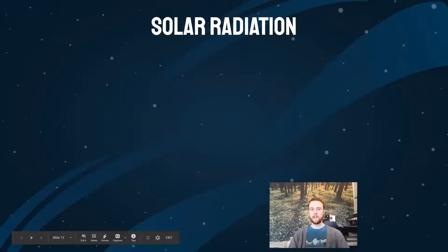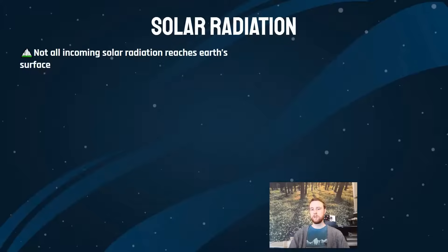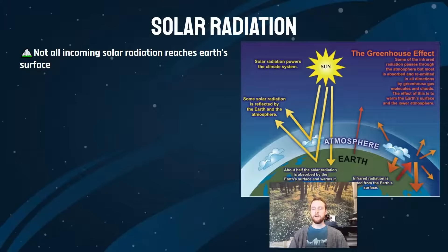Before we talk about the actual greenhouse effect, we need to understand a little bit about solar radiation and the different things that can happen when the sun's rays are headed towards Earth. Not all solar radiation will actually reach Earth's surface. This diagram is really helpful for understanding the different possibilities for radiation emitted by the sun.